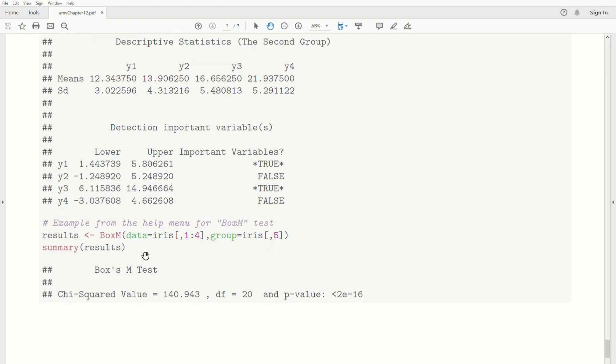Now, here is an example. It's actually the example from the help menu for the BoxM test where they look at the covariance matrices for the different groups for the four variables in IRIS. And IRIS is a data set that's distributed with base R, so you can do this test. I don't really know much more about it than that, but this is the help menu.